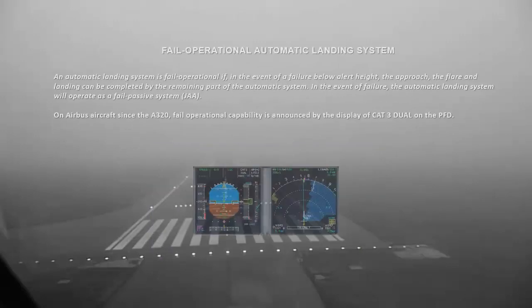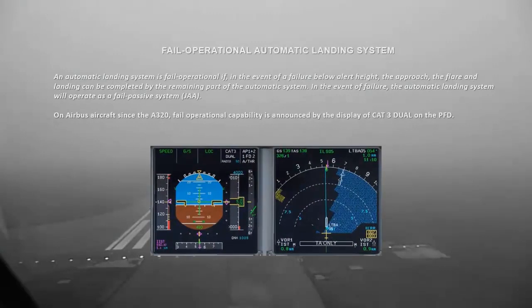Fail-operational automatic landing system: an automatic landing system is fail-operational if, in the event of a failure below alert height, the approach, the flare, and the landing can be completed by the remaining part of the automatic system. In the event of failure, the automatic landing system will operate as a fail-passive system (JAA). On Airbus aircraft since the A320, fail-operational capability is announced by the display of CAT 3 DUAL on the PFD.